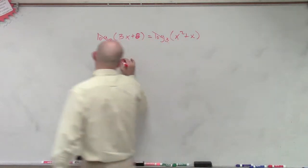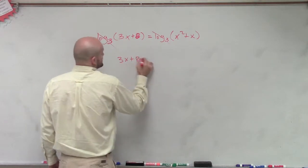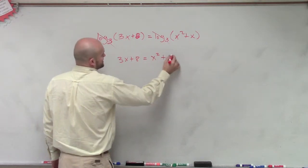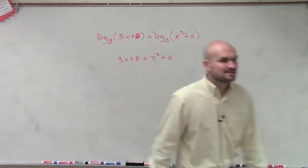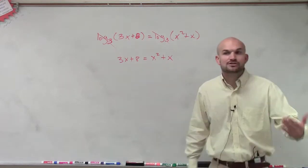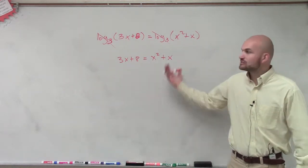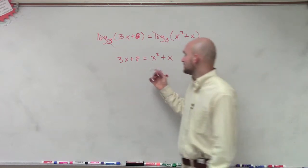So now we have 3x plus 8 is equal to x squared plus x. This is a quadratic equation, so to solve a quadratic equation we've got to make sure we set it equal to 0.